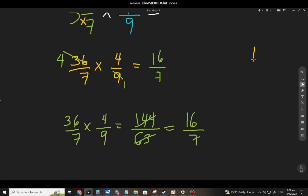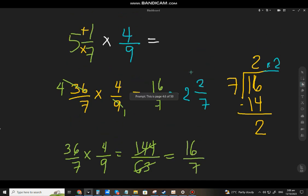Again, itong 16 over 7, gawin natin ang mixed number din. So, ilang 7 sa 16? Dalawa. 14. 16 minus 14, that will be 2. So, there you have it. Meron tayo ni or. 2 and remainder 2. 2 over 7.